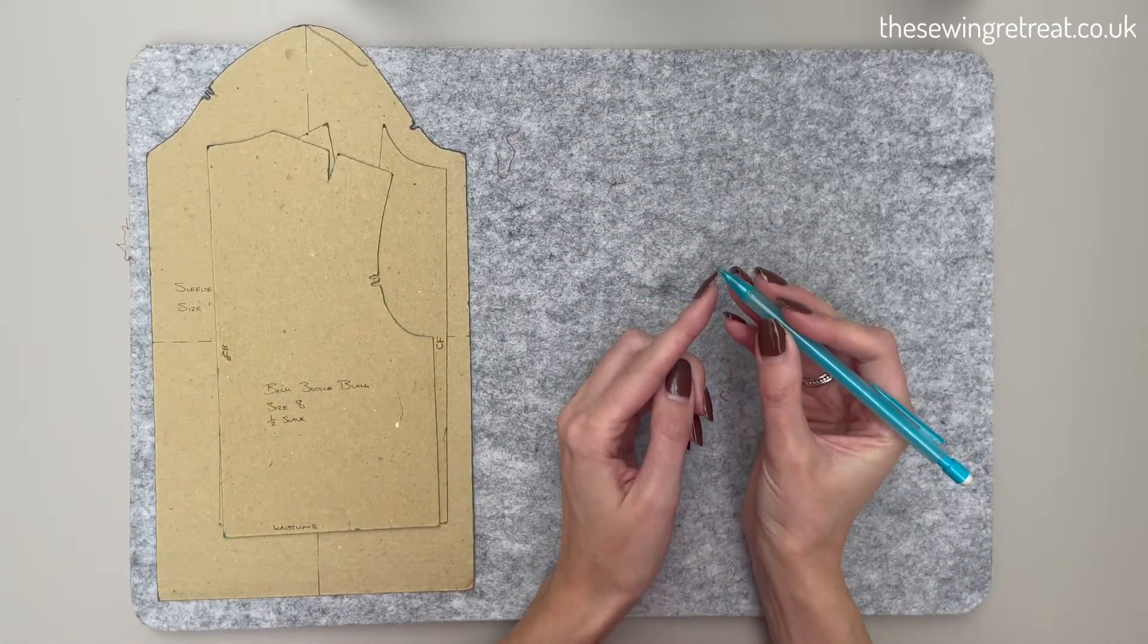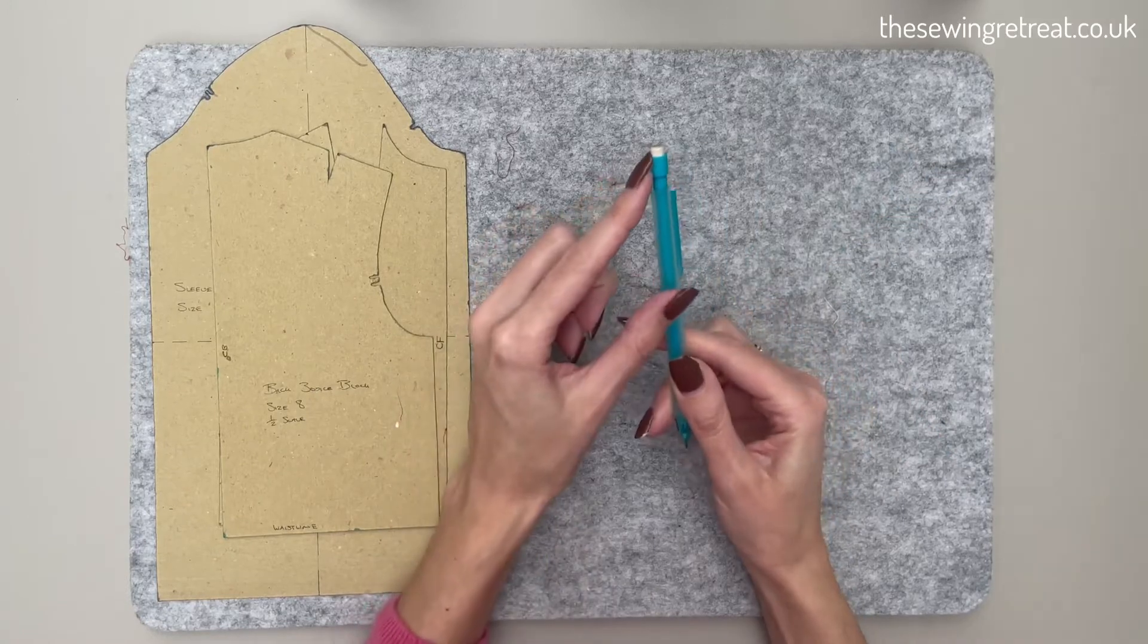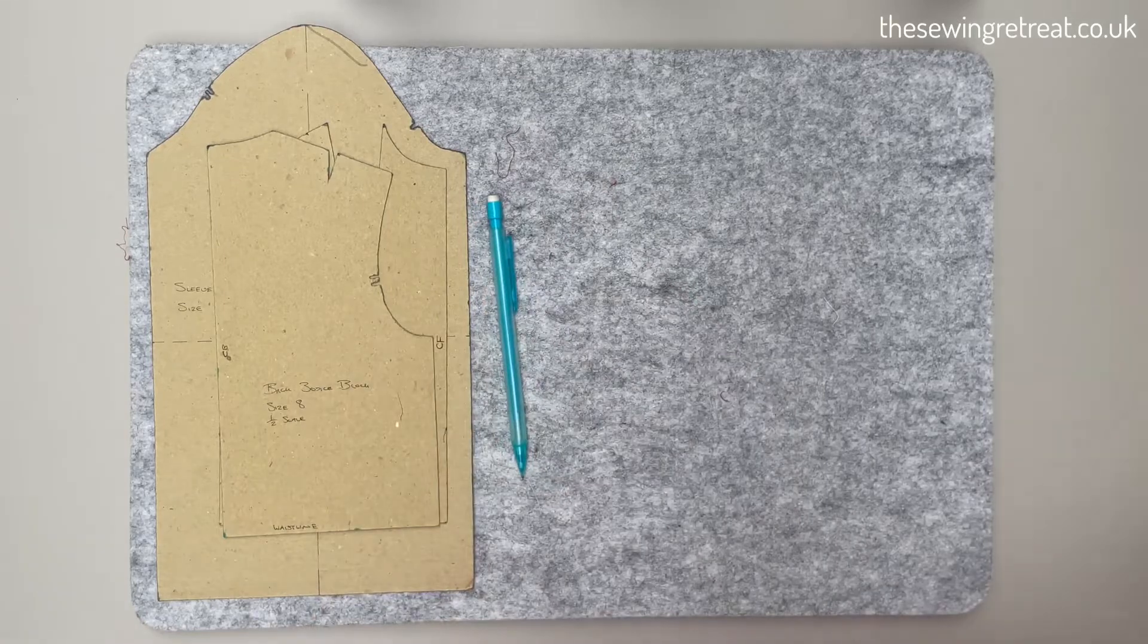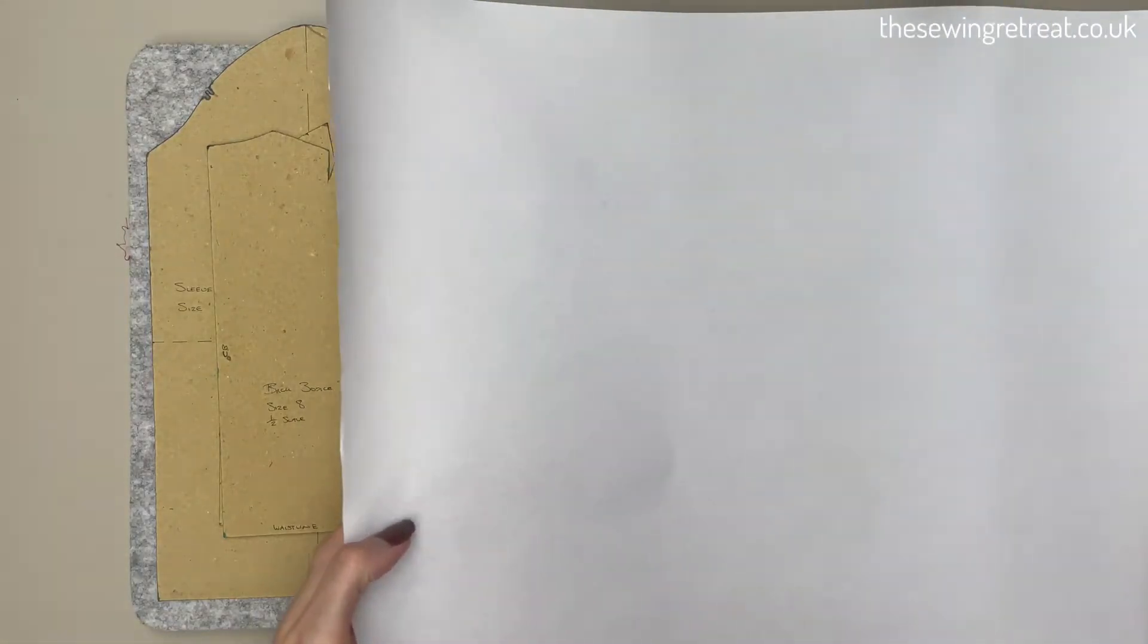Then we need pattern cutting paper. This paper is fairly thin but also quite strong, so that you can pin through the paper onto your fabric and then cut out your fabric using your patterns.